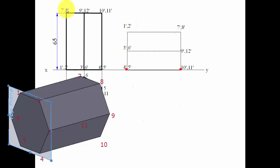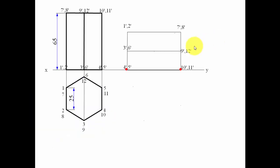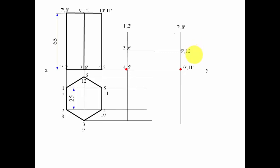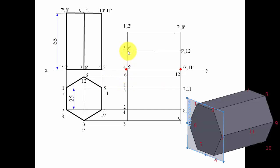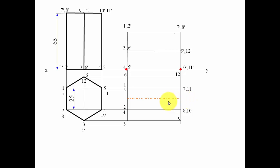Points one-dash comma two-dash, seven-dash comma eight-dash, three-dash comma six-dash, and nine-dash comma twelve-dash are labeled. We make the corresponding top view. Intersection points are found — for example, point six is found where its horizontal and vertical projector lines cross. Point seven is found similarly. The axis is drawn from the top end (seven to twelve) to the bottom end (one to six). Somewhere along this axis is a point at 20 mm from the top end.